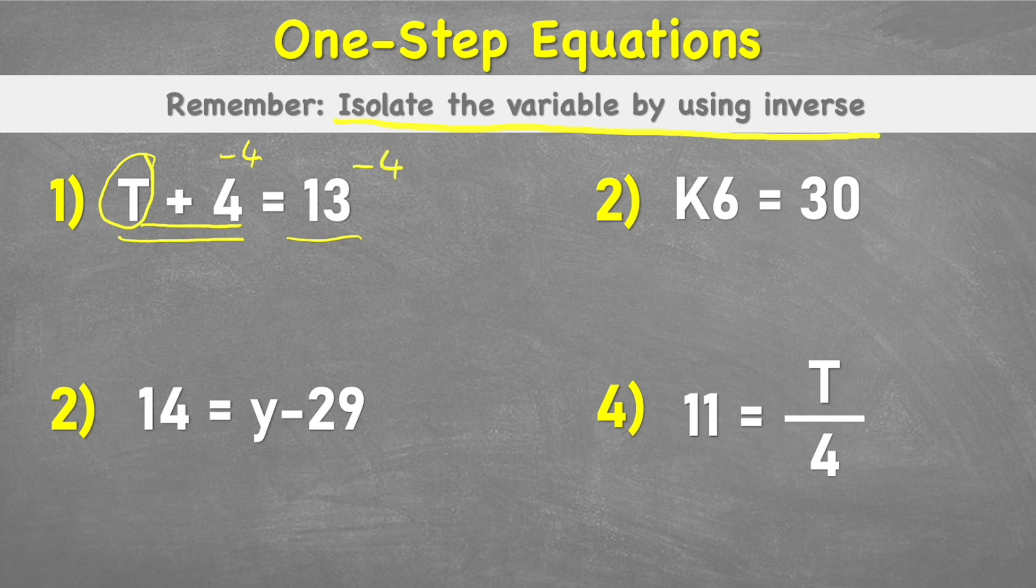So our new line would read T plus four negative four equals thirteen negative four. What we've done is we've added or inserted this negative four on both sides of the equation. Now we can simplify that line and we would end up with T, and plus four and negative four cancel themselves out, so I'd end up with just T equals thirteen subtract four which is nine. So therefore T equals nine.